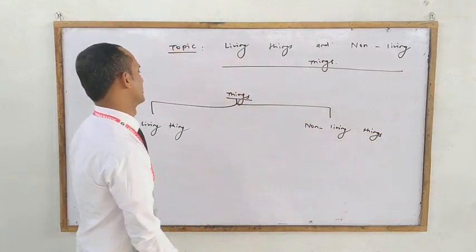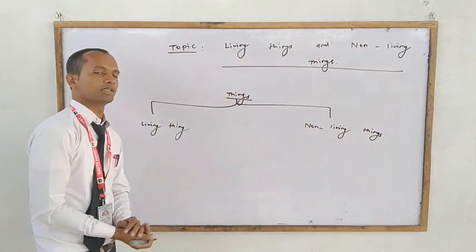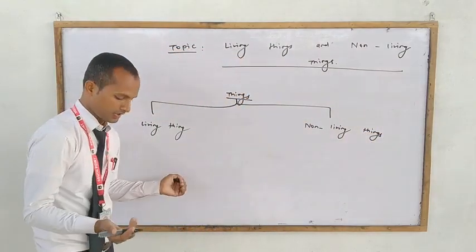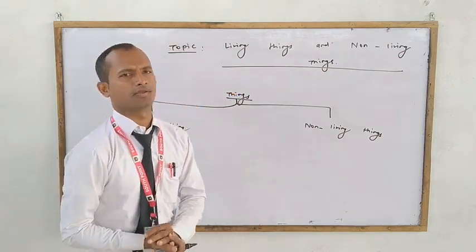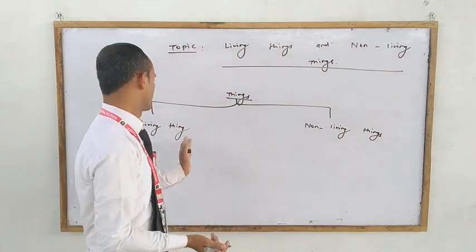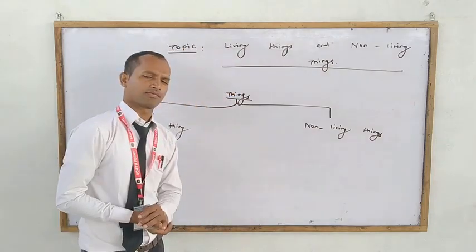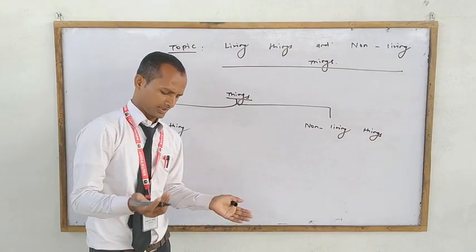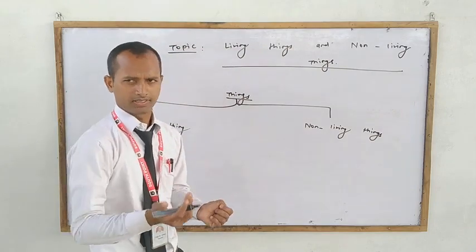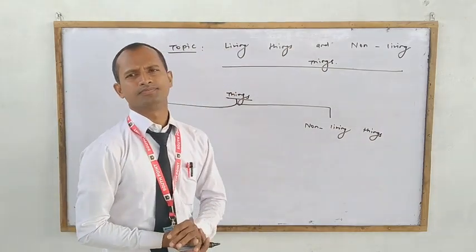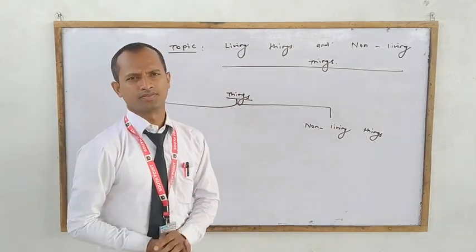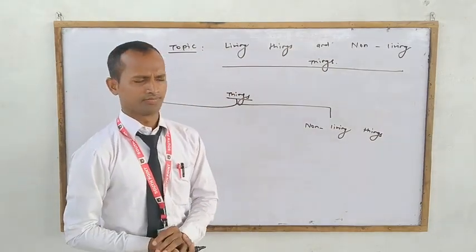As you all know, living things are those things which have life and have sense organs. Life means the ability to eat, to breathe, to move, and to feel.